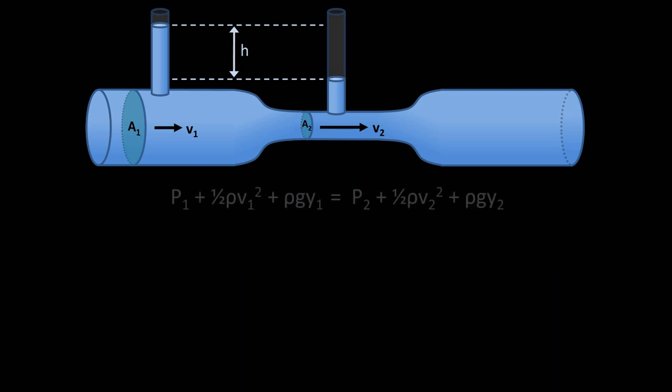So let's start with the complete Bernoulli equation. We see that although the pressures, that is p1 and p2, are neither given to us nor requested as part of the solution, we'll still need to include them along the way.